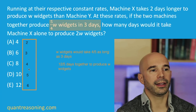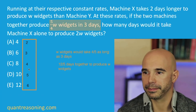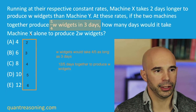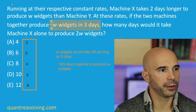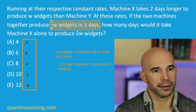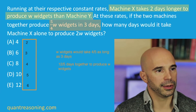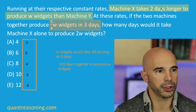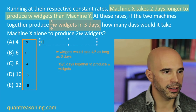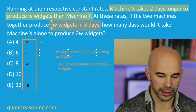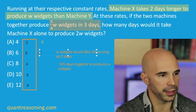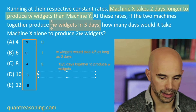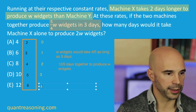My hope is that we can get this far in about one minute. Now that I have these five options for the number of days machine X takes alone, I'd like to incorporate the information from the first sentence to supply each answer choice with the number of days it would take machine Y on its own. Machine Y is two days faster, and that immediately eliminates answer choice A because it doesn't make sense that machine Y could do the job in zero days.